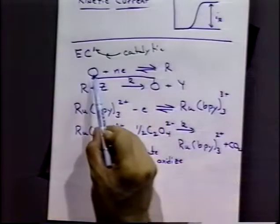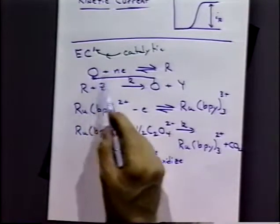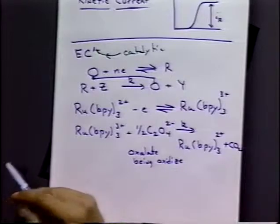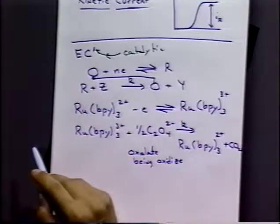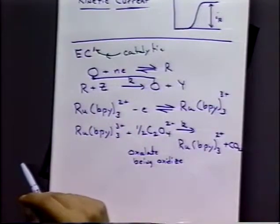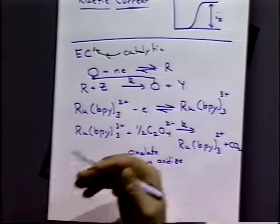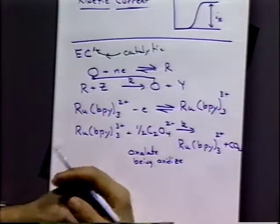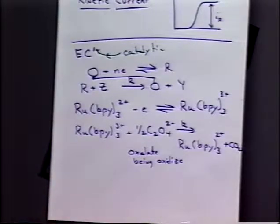So what might we expect there? Well, we might expect that the amount of current that is seen for the reduction of species O is going to be proportional to the amount of catalyst that we've got in solution, the amount of Z that we've got in solution. Also it will depend on the rate of that reaction of R plus Z. And it will depend on the mass transport properties of R plus Z. We'll take a closer look at these mechanisms and what they'll have as an effect on the wave shape in just a second. I'll give you an overview here.